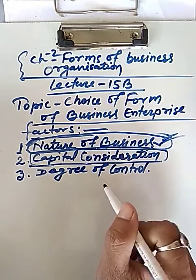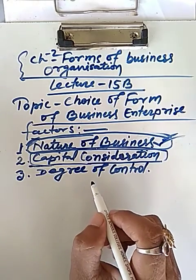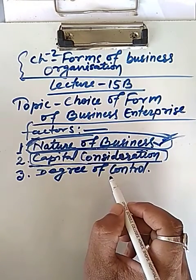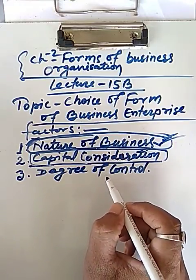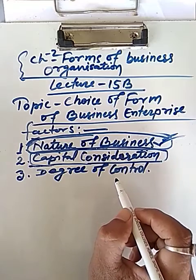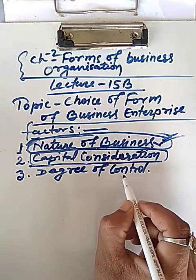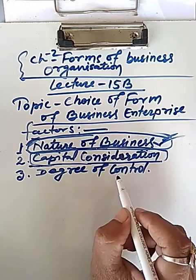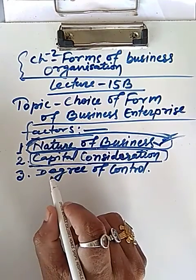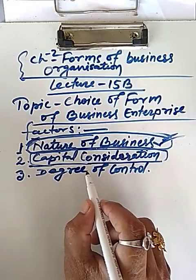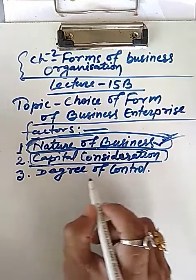The third factor is control. If the businessman desires complete and independent control over the business, then he has to prefer sole proprietorship firm. If businessmen do not mind sharing the control, then they can go for partnership or company form.